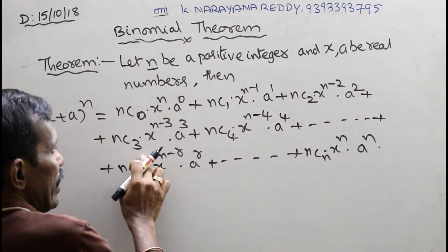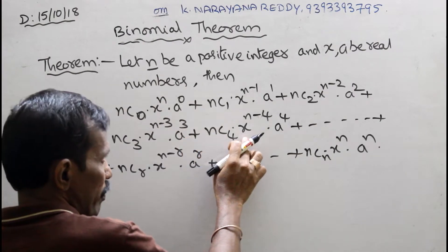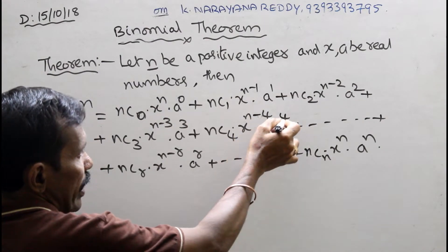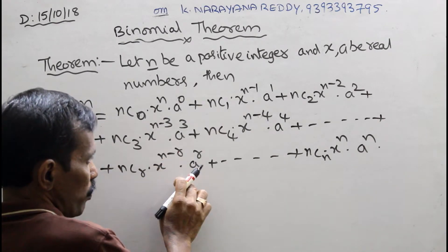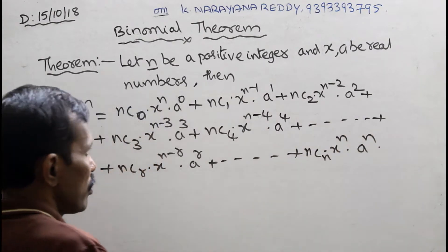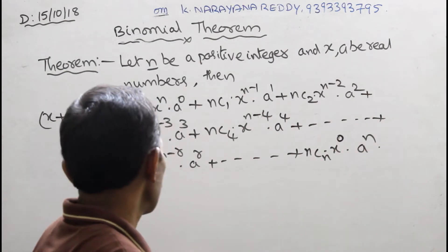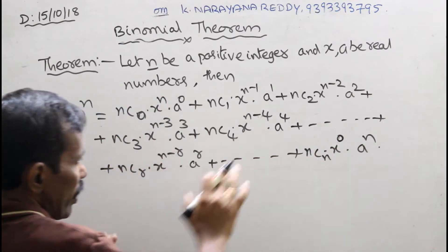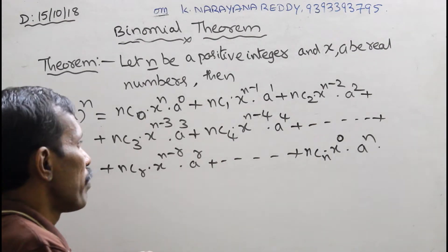Continuing the pattern: nc3 times x to the power of n minus 3 times a cubed; nc4 times x to the power of n minus 4 times a to the power of 4 — x is decreasing, a is increasing. This continues up to ncn times x to the power of 0 times a to the power of n. So the expansion starts with x to the power of n and ends with a to the power of n.